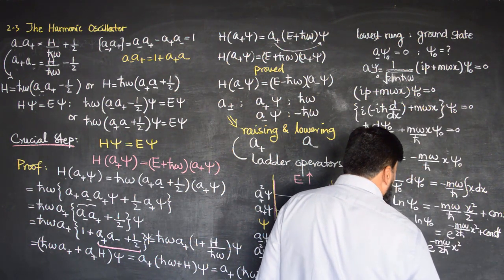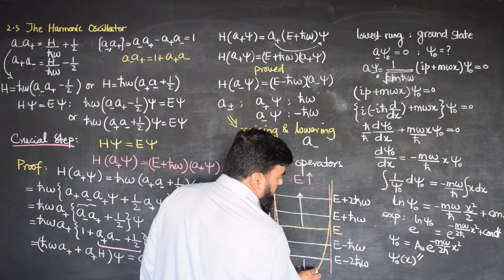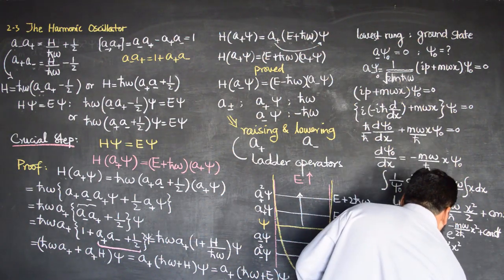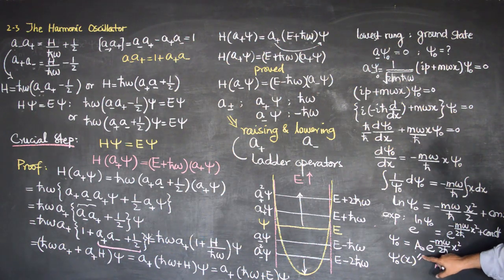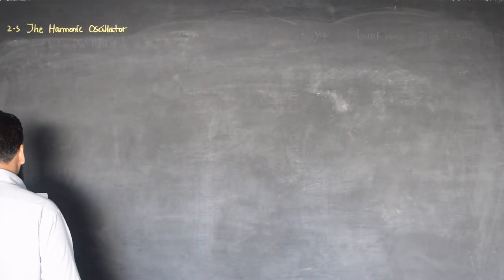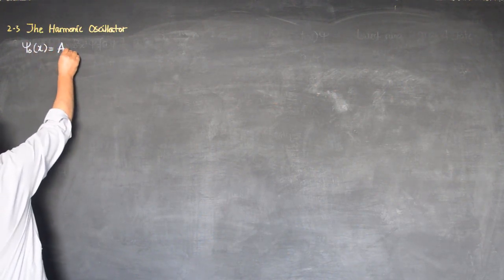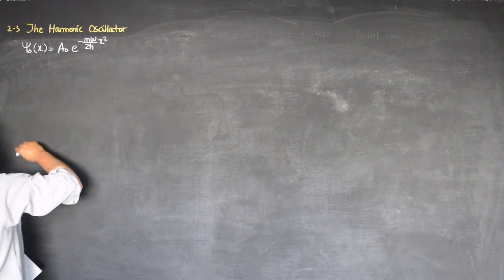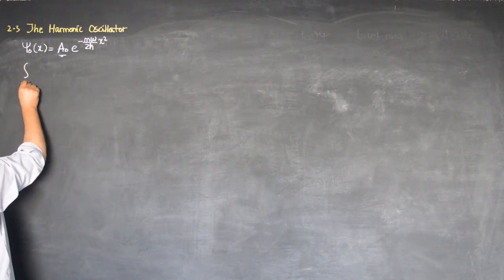We have found the ground state wave function, which is the lowest possible energy state. Now we need to find the normalization constant a₀. Once we find this value, we will have a fully normalizable wave function. The ground state wave function we derived is ψ₀(x) = a₀ · e^(-mω/2ℏ · x²).